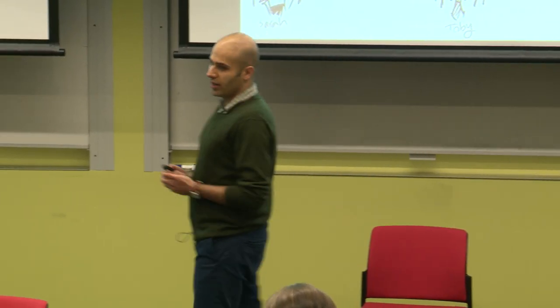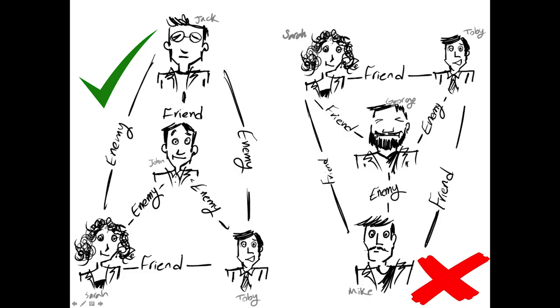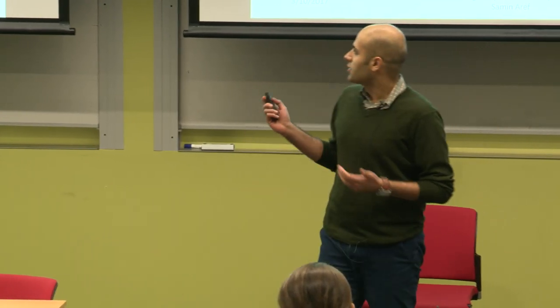In this network, the enemy of an enemy is a friend and we call it a balanced network. However, in many cases we're dealing with networks like this one on the right that is not balanced. But an interesting observation is that there are only a few edges that can be removed to make the network balanced. If we can somehow destroy the friendship between Sarah and George, then the network becomes balanced. We call the edges that need to be removed frustrated edges.